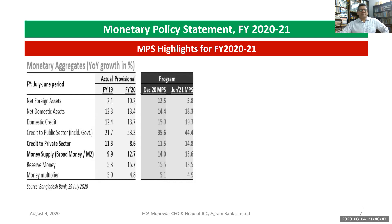Net domestic assets: the June 2020 actual is 13.4%, December 2020 program is 14.4%, and domestic credit is 13.7% actual, now targeted at 15%. Credit to the public sector including government was 53.3% and is now targeted at 35.6%. Projected for June 2021 is 14.4%. Credit to the private sector: fiscal 2020 actual is 8.6%, projected December 2020 is 11.5%, and June 2021 is 14.8%. Broad money supply: June 2020 is 14%, and June 2021 is projected at 15.6%.